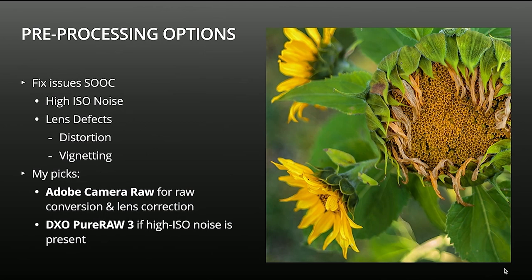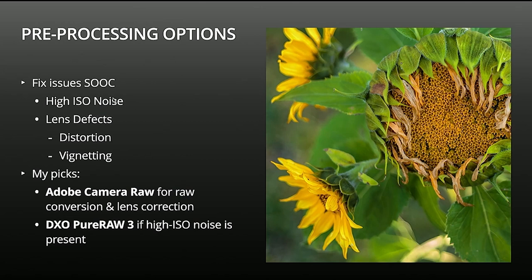To start off, we're going to talk about pre-processing. This is where you're converting your RAW into a TIFF — the first things you do before any creative editing, fixing issues straight out of the camera. SOC is an acronym for straight out of camera. The types of issues I'll fix there are going to be high ISO noise and lens defects — distortion correction and any lens vignetting. For most of my images I go through Adobe Camera Raw as my primary raw converter, or Lightroom Classic. I shoot Canon primarily, and I found that the Adobe tools work really well. There are other camera manufacturers — some people who shoot Sony or Fuji find another tool has a better rendering algorithm for their RAW files. Adobe has served me really well.